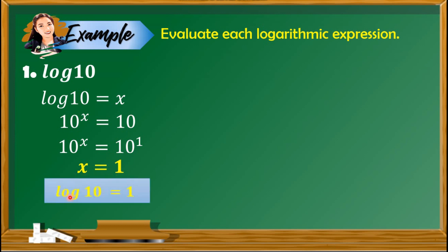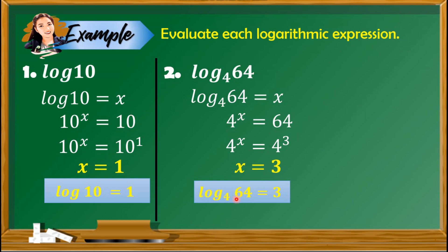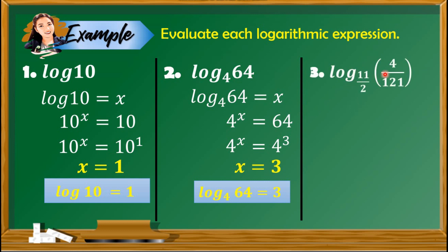Find the value of log base 4 of 64. Let x be the value, then convert to exponential form: 4 raised to x equals 64. We rewrite 64 with base 4 — that is 4 raised to 3. Since the bases are the same, ignore them and equate the exponents: x equals 3. Therefore, log base 4 of 64 equals 3.